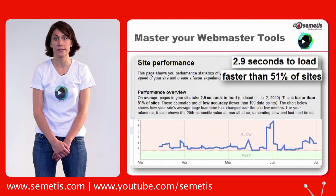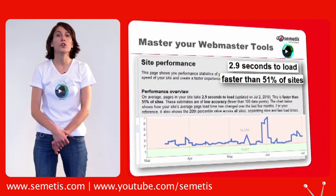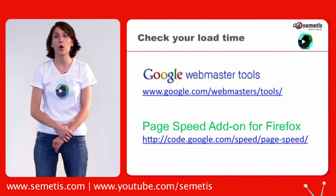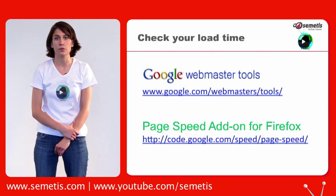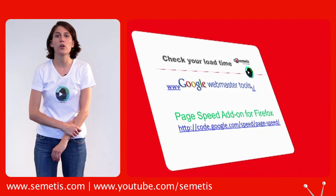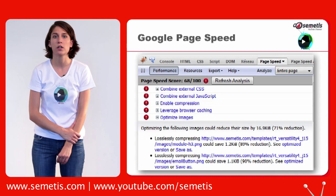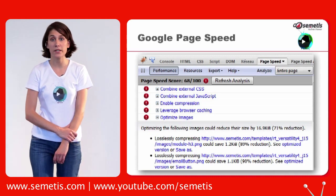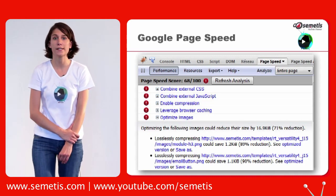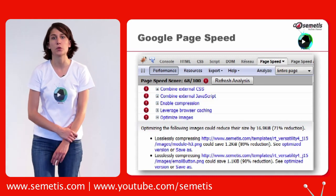Now you know how to evaluate your site, but what can you do about it? You can use the webmaster tools or the Page Speed add-on. Here we took the example of Page Speed and analyzed Sematis' home page. The tool tells us that some images have not been compressed — doing so will diminish the size of the images and your load time.